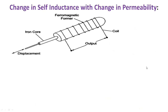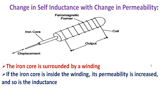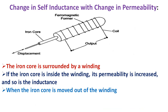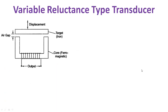We also have a change in self-inductance with a change in the permeability of the core. This shows the principle of variation of permeability causing a change in self-inductance. The iron core is surrounded by a winding. If the iron core is inside the winding, its permeability is increased and so is the inductance. When the iron core is moved out of the winding, the permeability decreases, resulting in a reduction of the self-inductance of the coil. This is how the transducer can be used for measuring displacement.